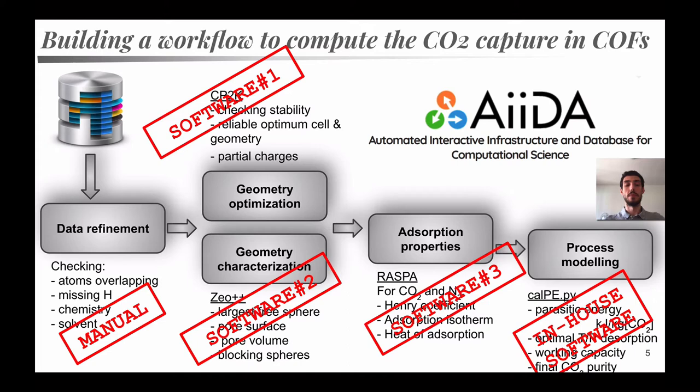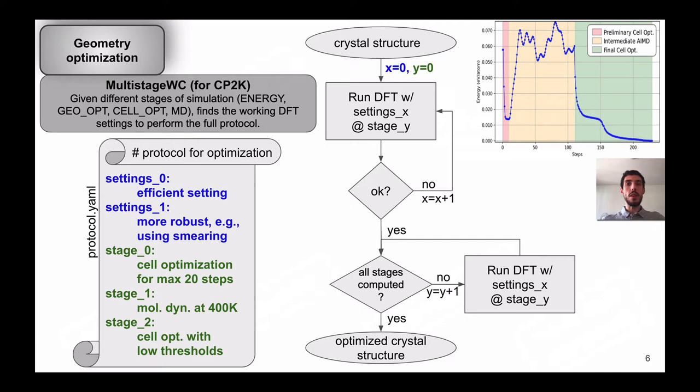Let's start from the geometry optimization by using DFT. What we shaped for working conveniently with our material is what we call the multi-stage work chain, where we have a protocol of optimization, where we specify different settings, a very efficient setting, but may not work, for example, for conductive materials where we need the smearing, and we don't know a priori which materials are conductive. And for that, we set a new set of settings, and then different stages for the optimization. One first cell optimization with only 20 steps, then we run molecular dynamics, and we'll show why, and then we do a final cell optimization.